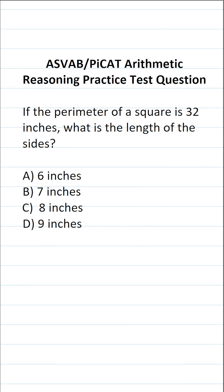This arithmetic reasoning practice test question for the ASVAB and PiCat says: if the perimeter of a square is 32 inches, what is the length of the sides?